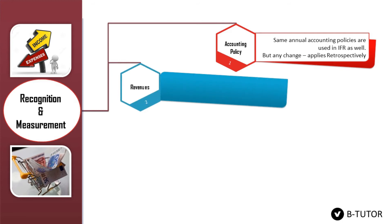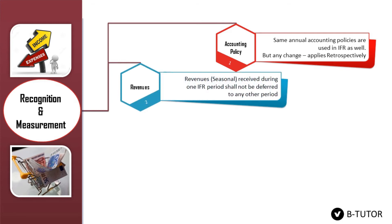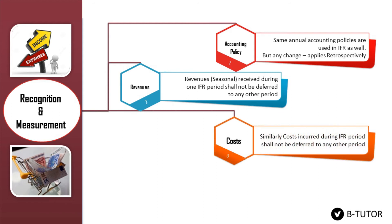Number two: revenues. Revenues of one interim period shall not be deferred to any other interim periods. For example, during festive seasons, the clothing industry's revenue will be higher compared to other periods. So in order to maintain consistent profit in interim financial statements, the clothing industry shall not defer its festive season revenue to other periods. Number three: costs. Similarly, like revenues, costs shall not be deferred from one period to another period.